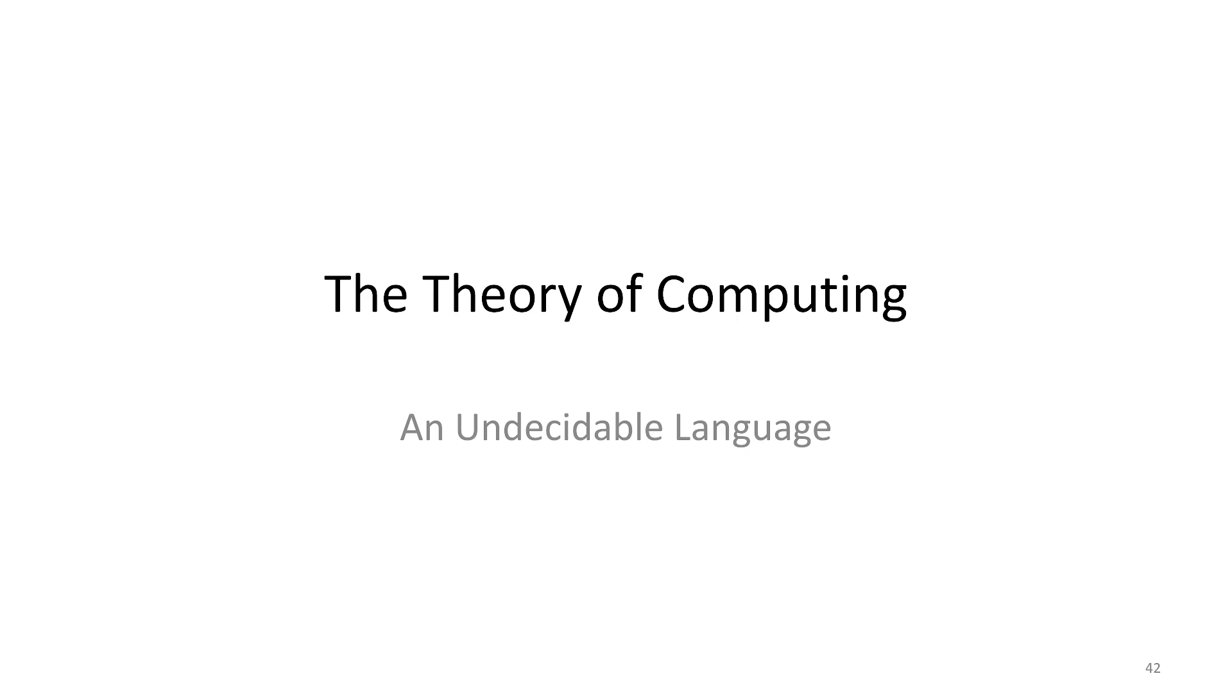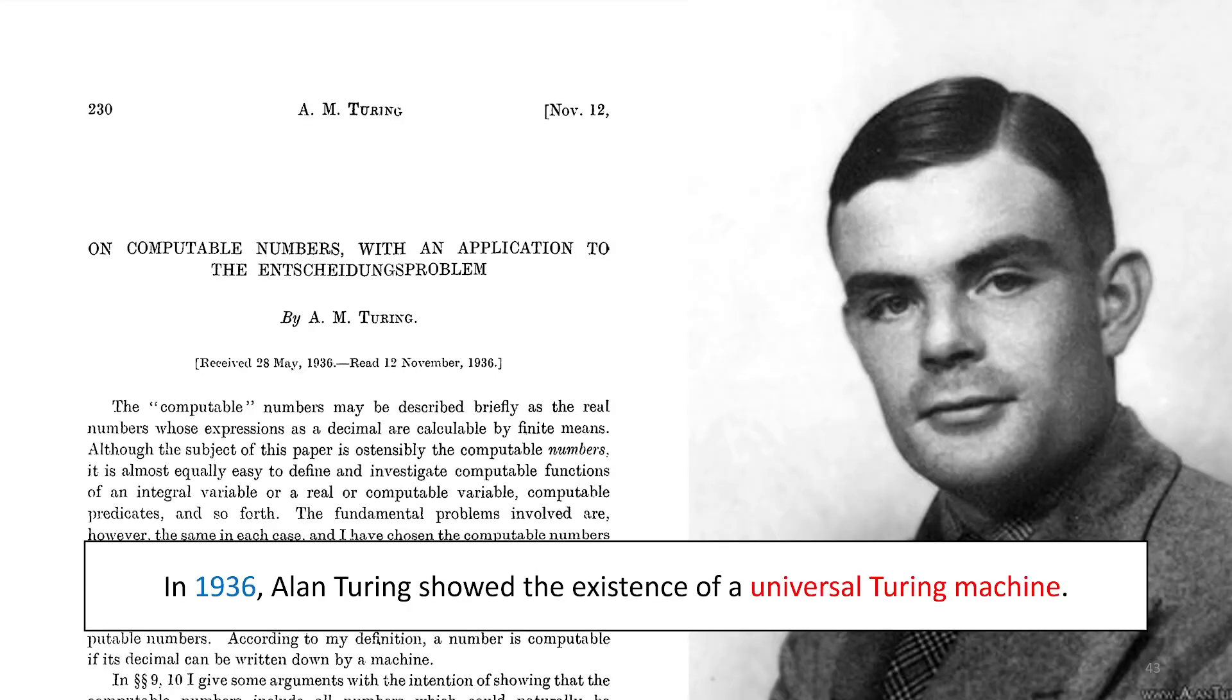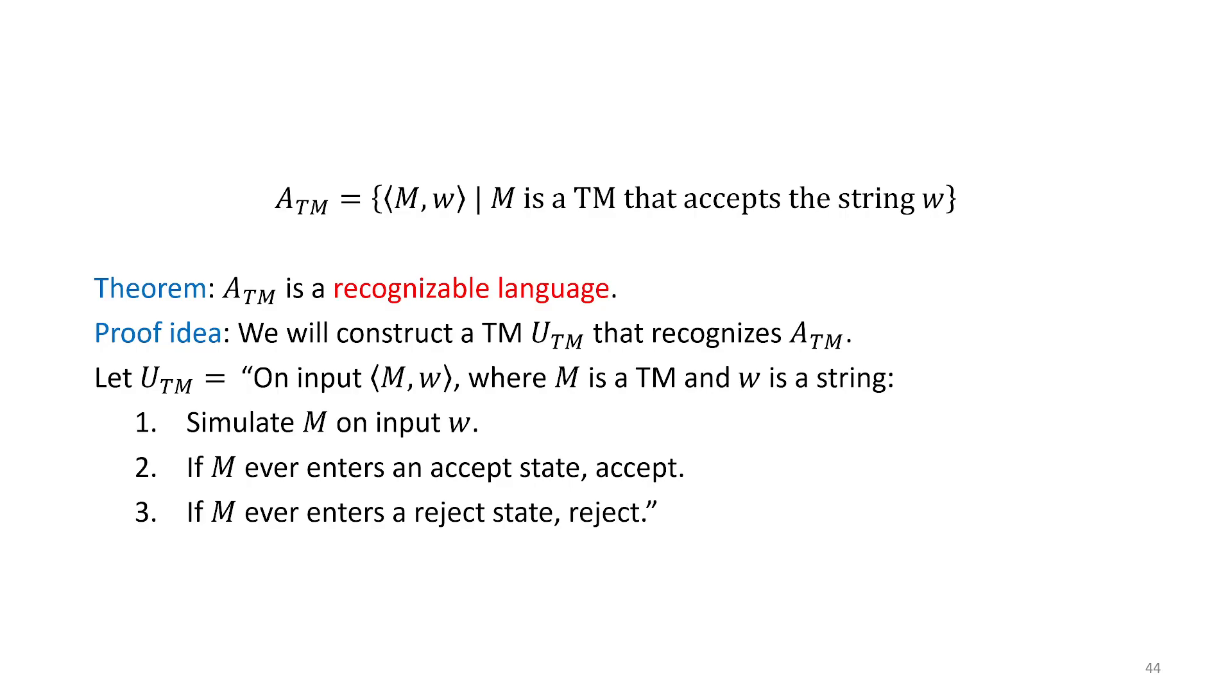The first undecidable language was demonstrated by Alan Turing in his original 1936 paper, where he introduced the Turing machine and proved the existence of a universal Turing machine. Let's look at this language ATM. Remember, this is encodings of machines now, all encodings of machines M and W such that M is a Turing machine that accepts the string W.